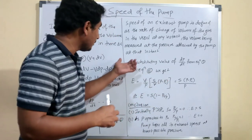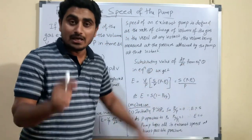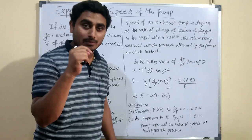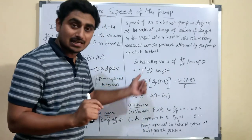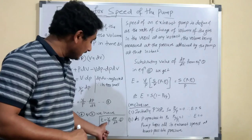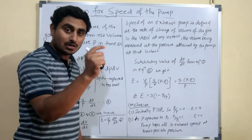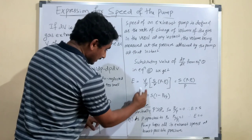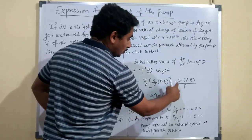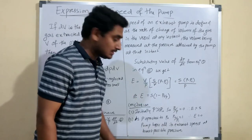Now substituting the value of −dP/dt from equation 1 — which is S(P − P0)/V — into equation 6: E = −(V/P)·(dP/dt) = (V/P)·S(P − P0)/V. The V terms cancel, giving E = S(P − P0)/P.